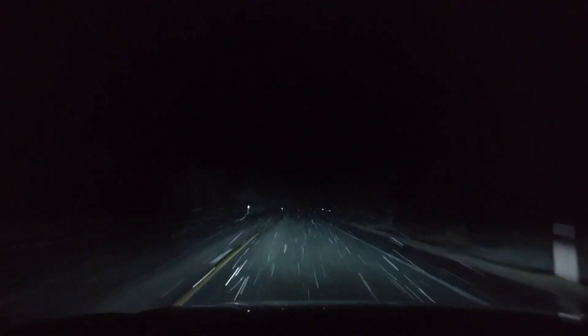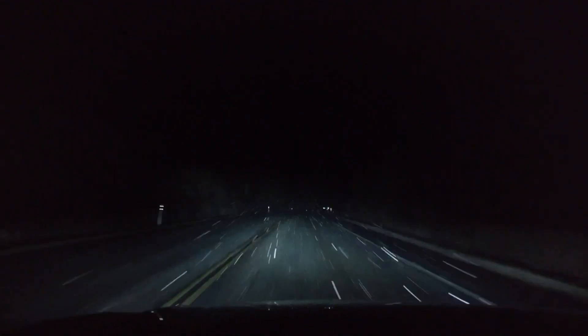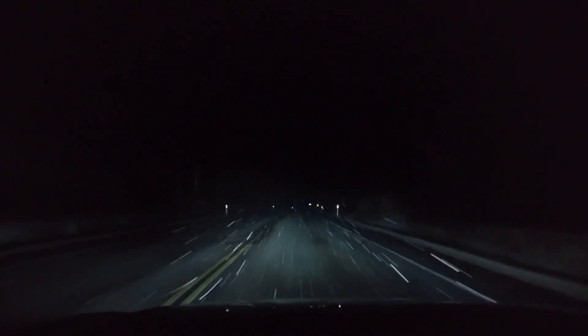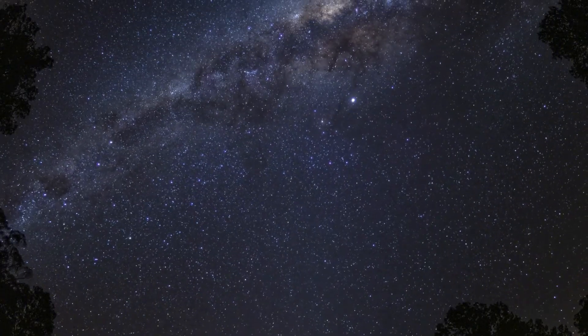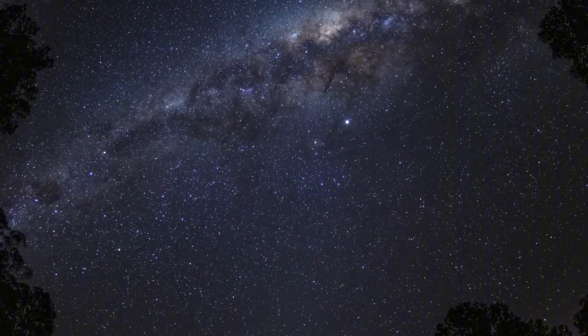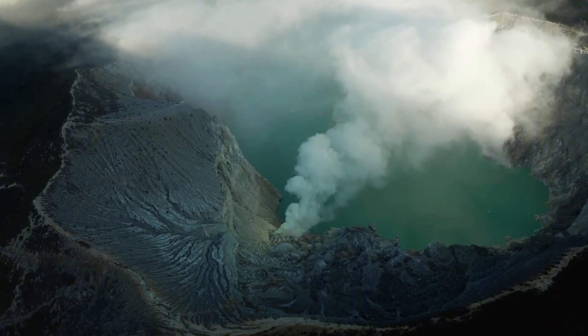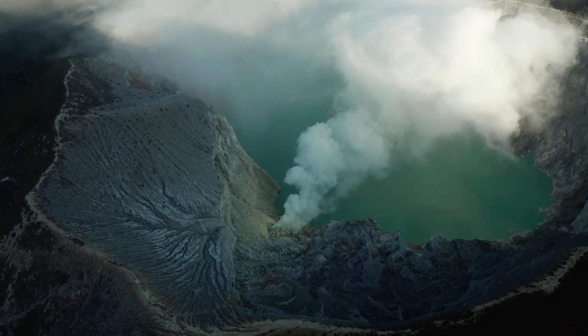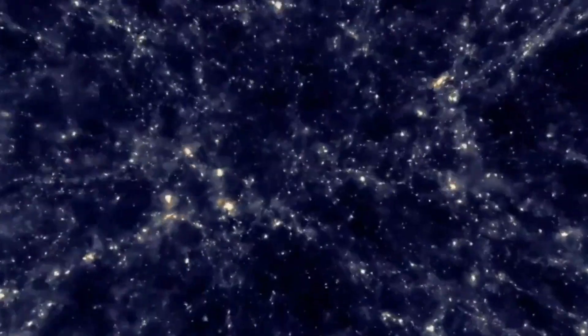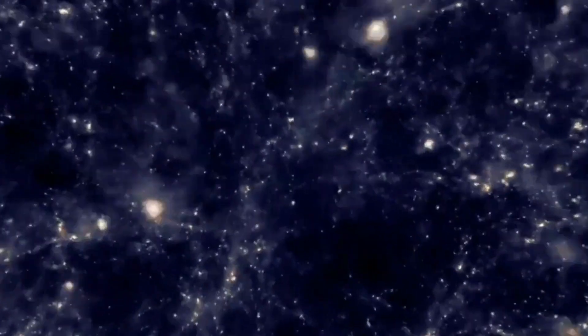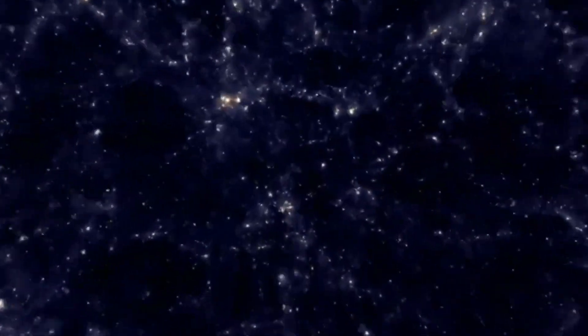A world where it rains molten glass sideways at 4,500 miles per hour. A planet being slowly eaten by its star. How about a diamond world covered in lava oceans? Sounds like sci-fi, right? Well, these aren't movie plots. They're real places out there in our galaxy.